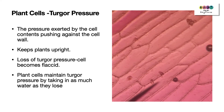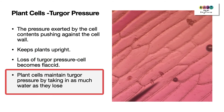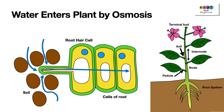Turgor pressure is the pressure exerted by the cell contents pushing against the cell wall. Turgor pressure is what keeps plants upright because their cells are turgid. If you lose turgor pressure, the plant cells become flaccid. Plant cells maintain turgor pressure by taking in as much water as they lose. Osmosis is a short topic but important because it covers how water enters and moves within plants.